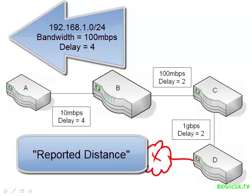Quite simply, from router A's perspective, the reported distance is the metric that it receives from router B.